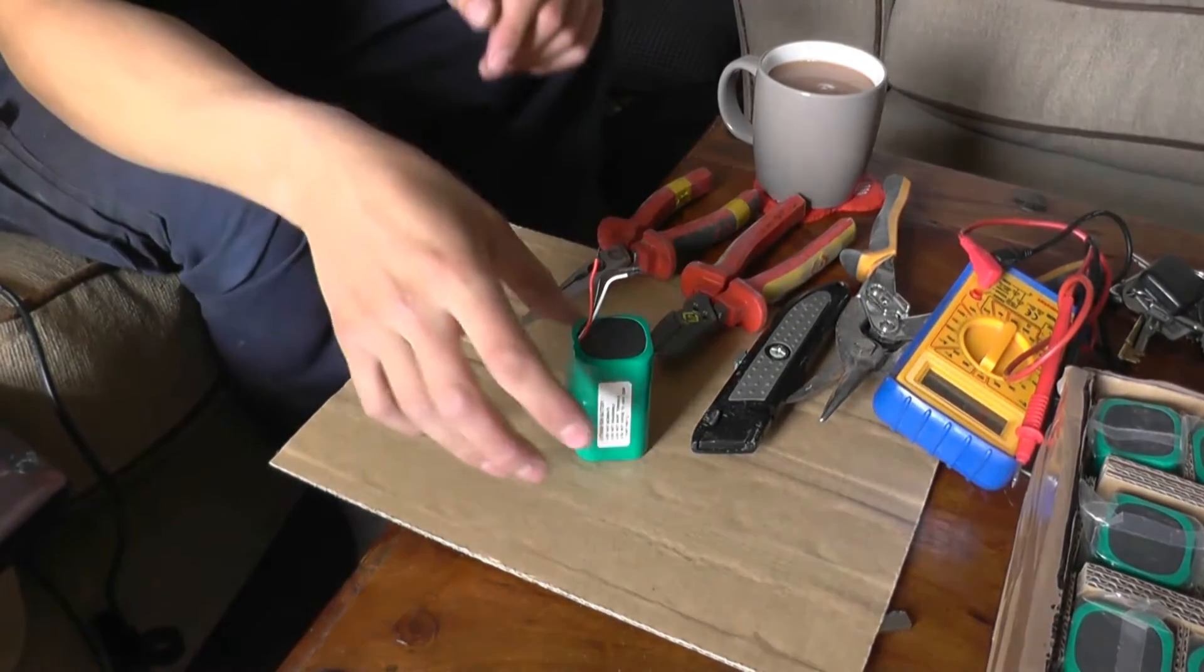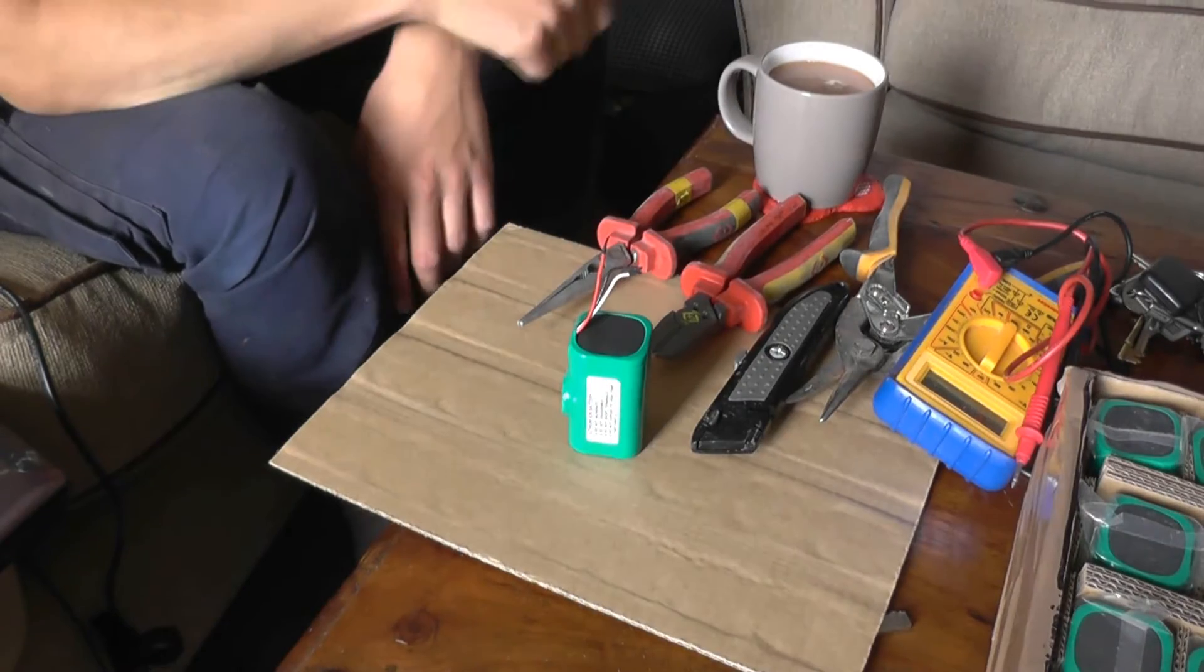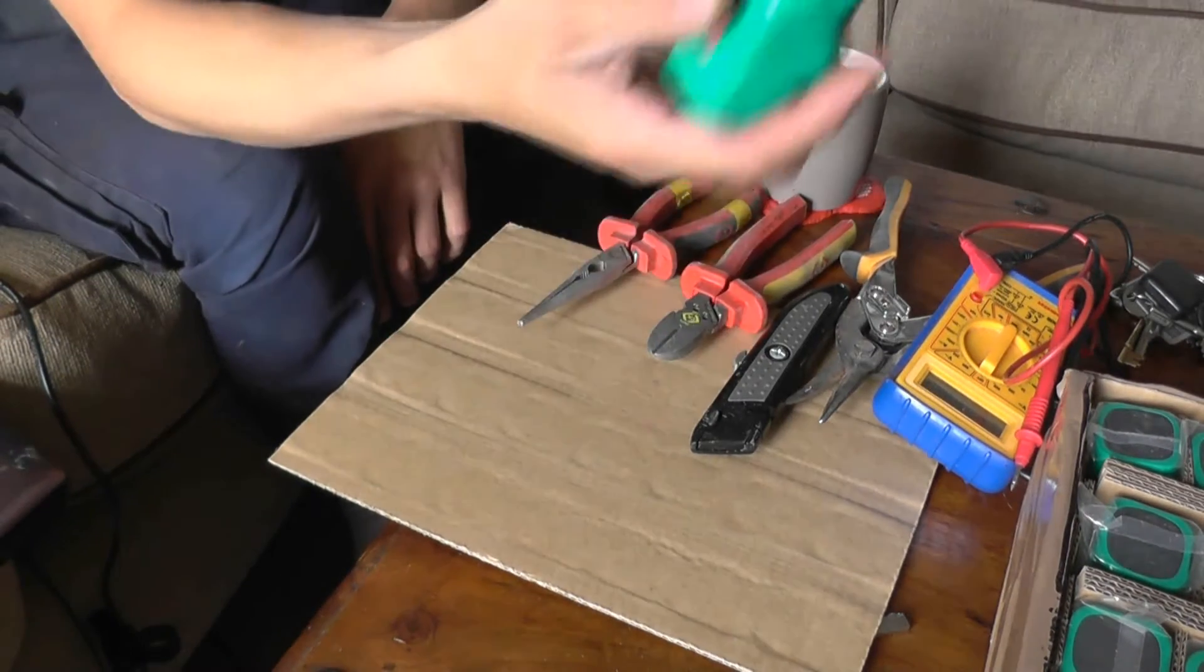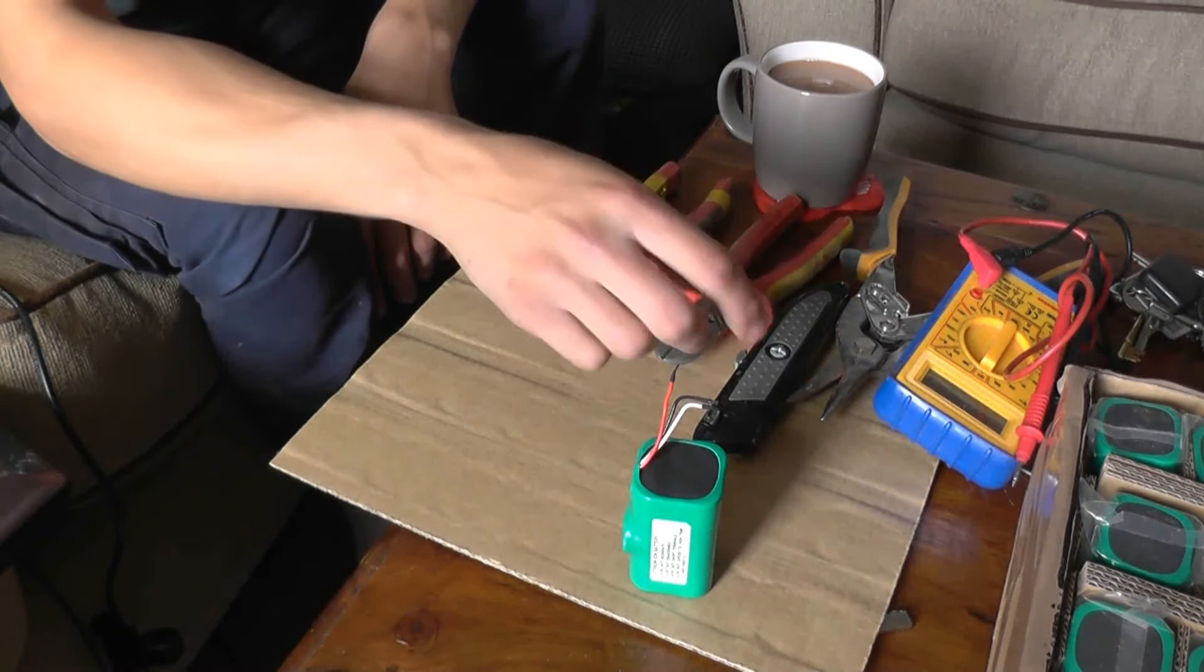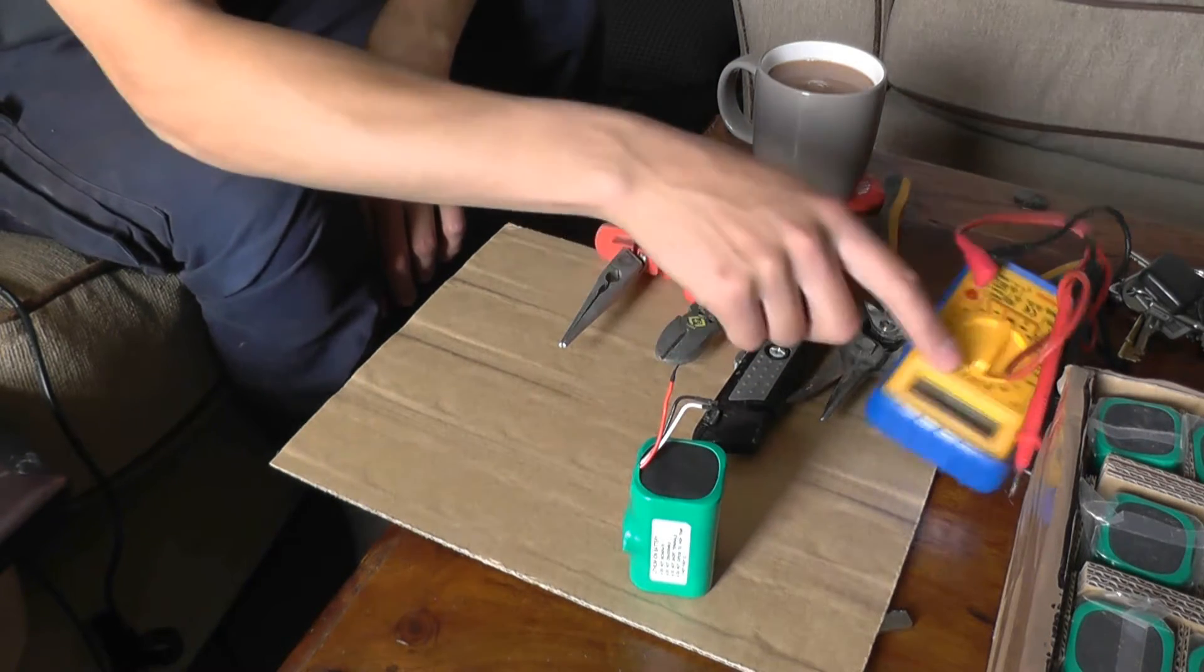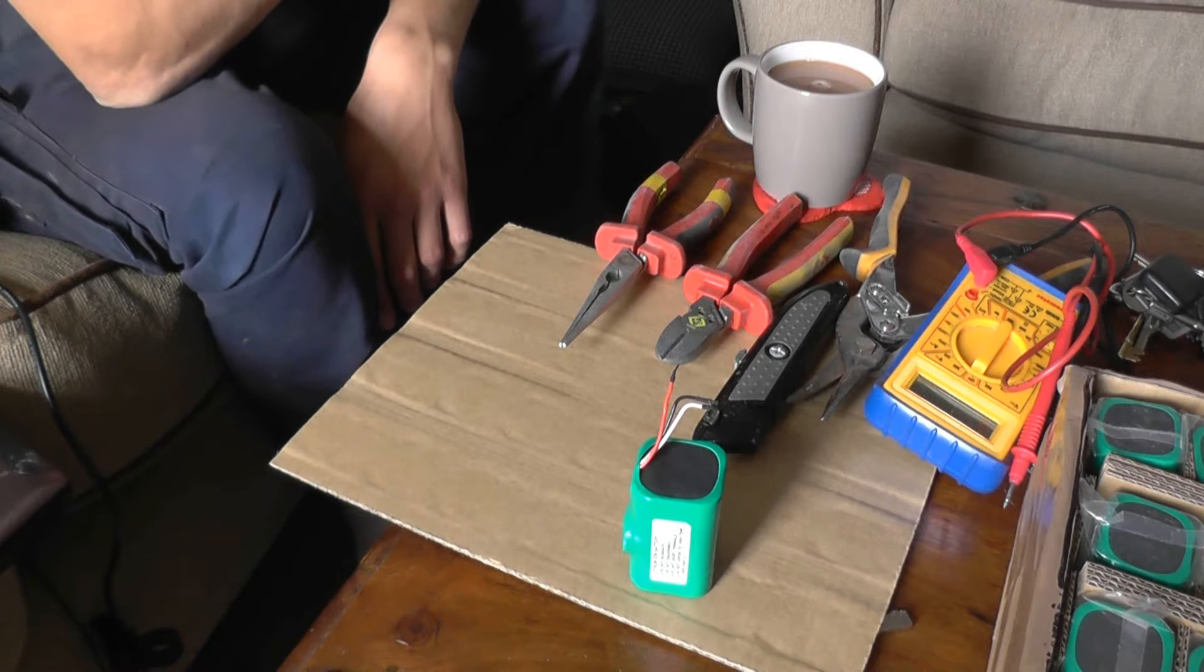So one cell battery pack, nose stick pliers, side cutters, Stanley knife and snips just in case, and meter. That's what I'm going to be using.